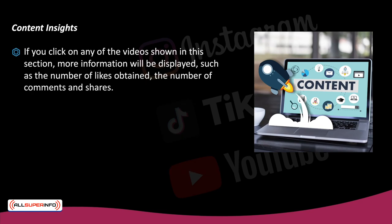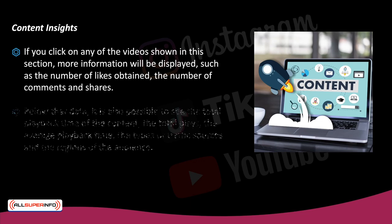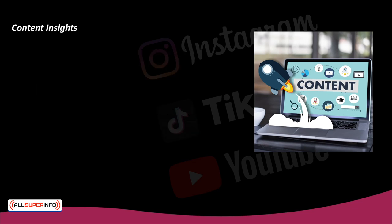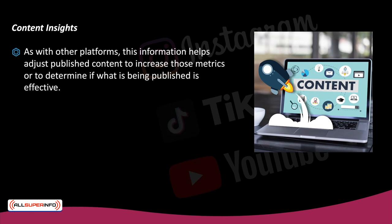If you click on any of the videos shown in this section, more information will be displayed, such as the number of likes obtained, the number of comments and shares. Below that data, it is also possible to see the total playback time of the content, the total plays, the average playback time, the types of traffic sources, and the regions of the audience. As with other platforms, this information helps adjust published content to increase those metrics or to determine if what is being published is effective.